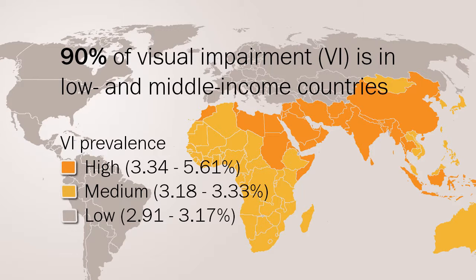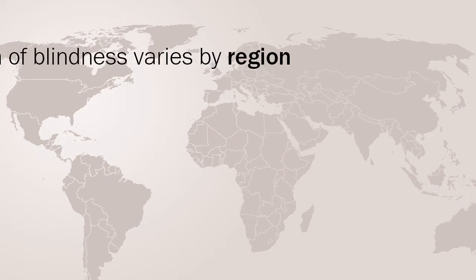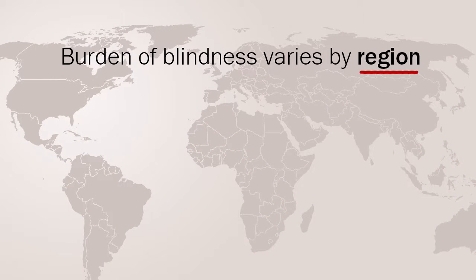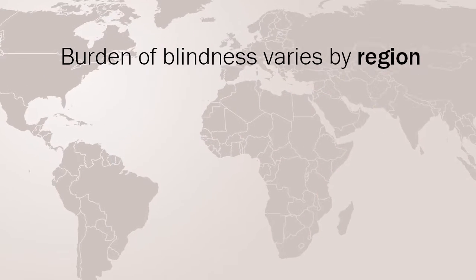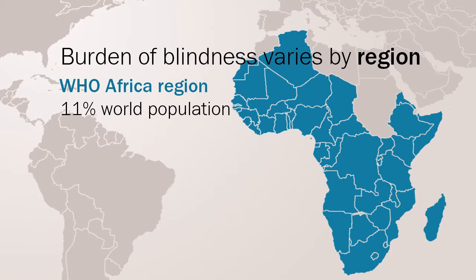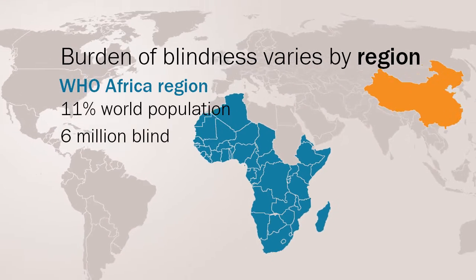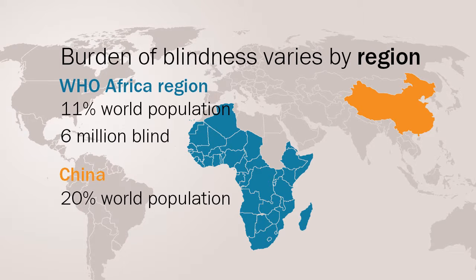Prevalence data is important — it allows health workers to identify the number of blind and visually impaired people in their country or region. The burden of blindness varies by region. This graph shows the numbers of blind people in each World Health Organisation region. Africa, which has about 11% of the world's population, has a disproportionately high number of blind people — about 6 million — compared to China, which has 20% of the world's population and about 8 million blind people.